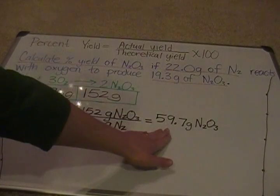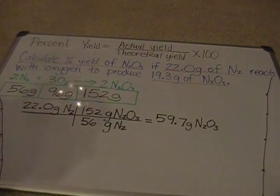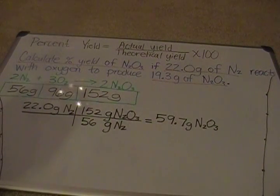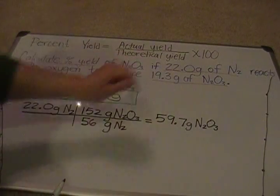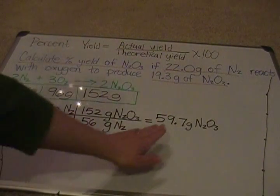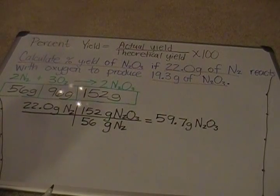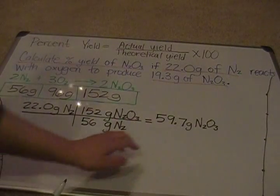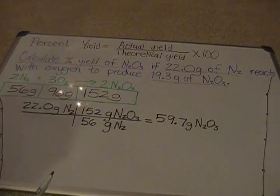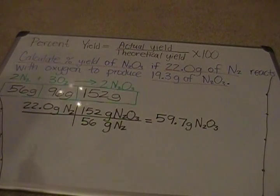This is a theoretical value, but in the real world we don't get those theoretical values. In fact, the question tells us what we actually got: the N2 reacted with oxygen to produce only 19.3 grams — nowhere near 59.7 grams. To calculate percent yield, we'll use the actual amount from the question and the theoretical amount we just calculated, plugging them into the percent yield equation.